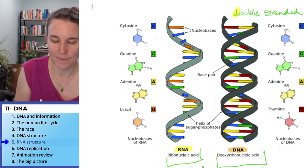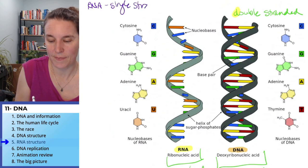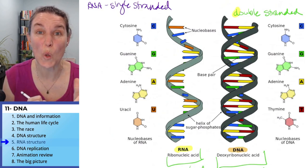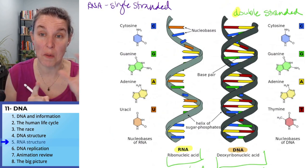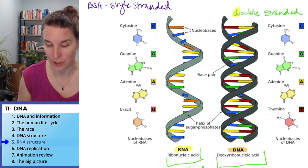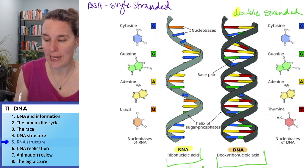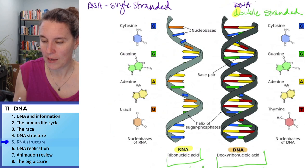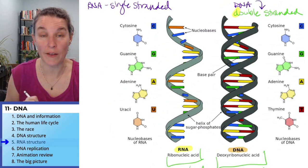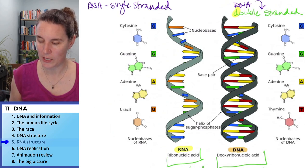RNA is single stranded. It can fold up and form all sorts of weird shapes — we're going to see those, especially in the next lecture. DNA is double stranded. Okay, that's one of the big differences. What's another big difference?